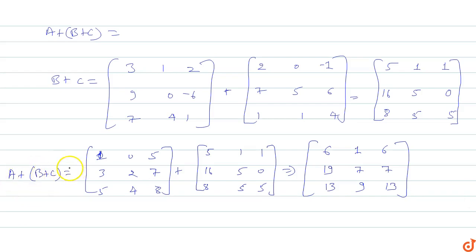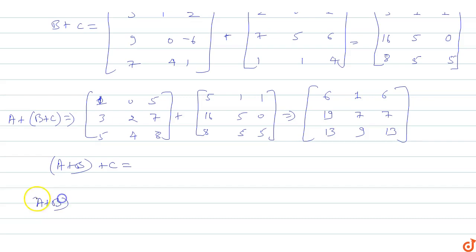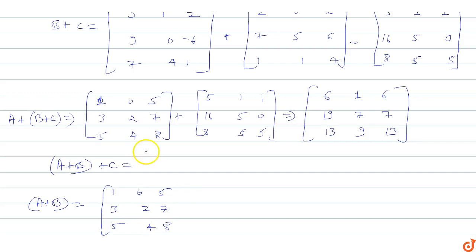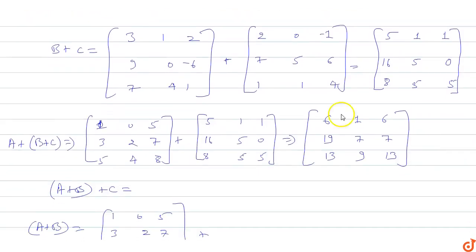Now we find (A + B) + C. First compute A + B. Matrix A is 1 0 5 / 3 2 7 / 5 4 8, and matrix B is 3 1 2 / 9 0 -6 / 7 4 1.